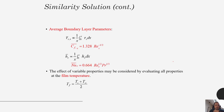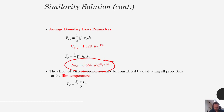Something else that came out of that similarity solution that's going to be very important is the Nusselt number correlation. This is the correlation for the average Nusselt number, and we can calculate the Nusselt number and subsequently calculate the convective heat transfer coefficient for each of these different scenarios.